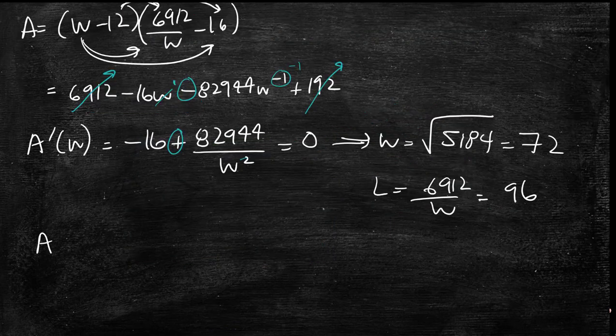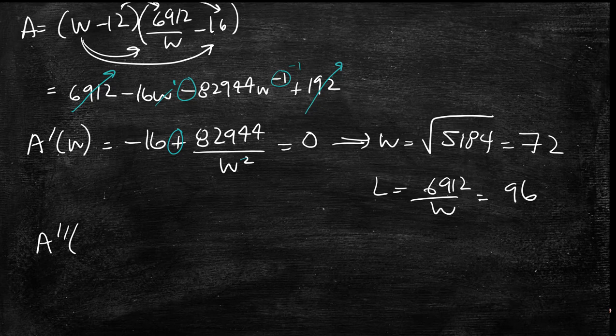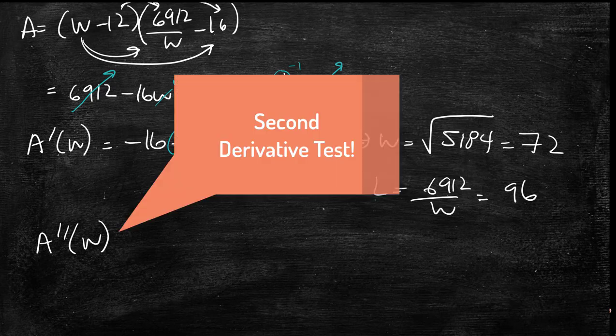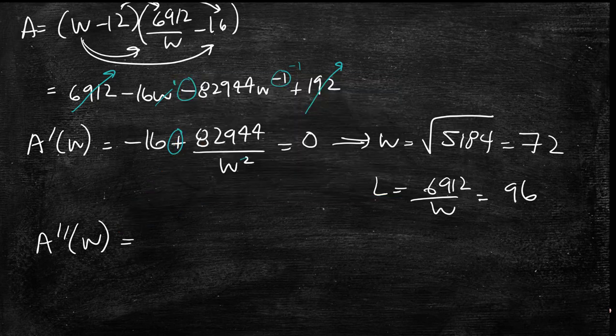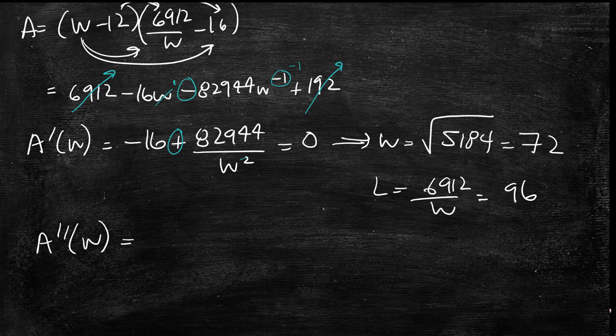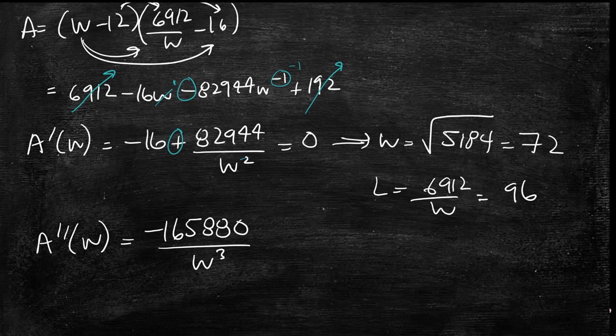But what we want to make sure is in fact that this is going to be the maximum. And in order to do that, it has to be greater than 0. So if we take the derivative again, you're going to be left with minus 165880 over W^3. So these are big numbers, so make sure you keep track. And you know that it doesn't matter what you plug into W, that's still going to be negative.